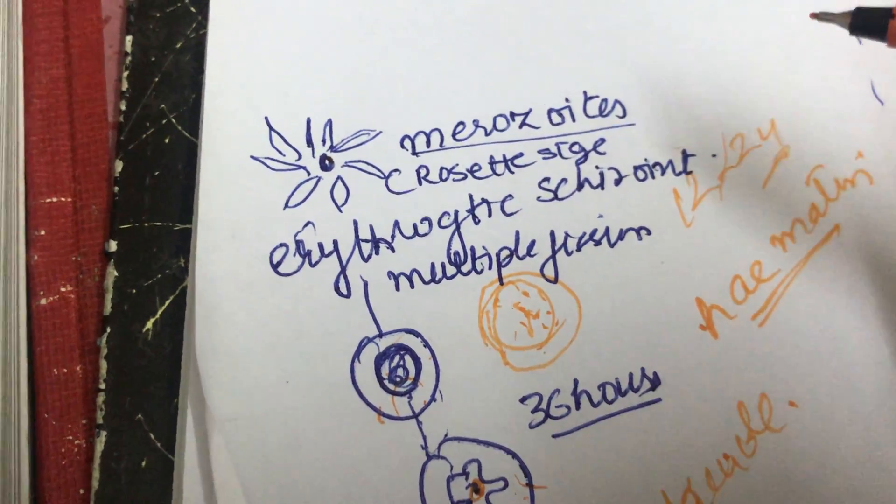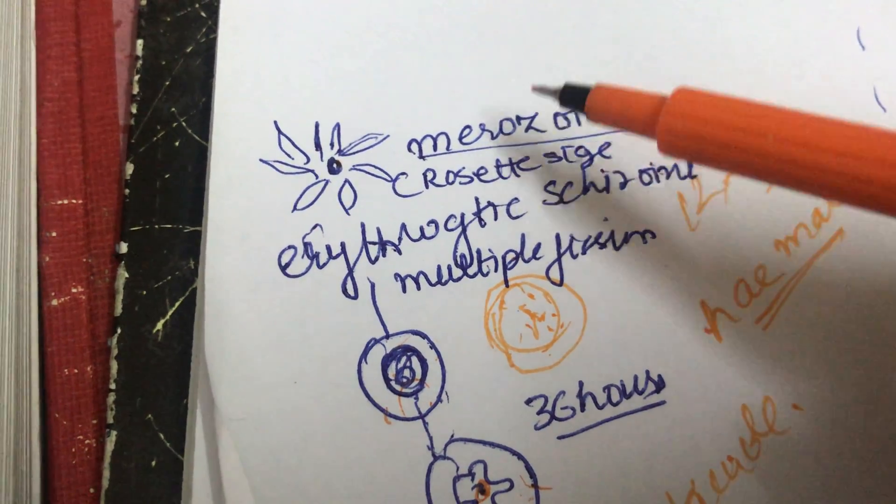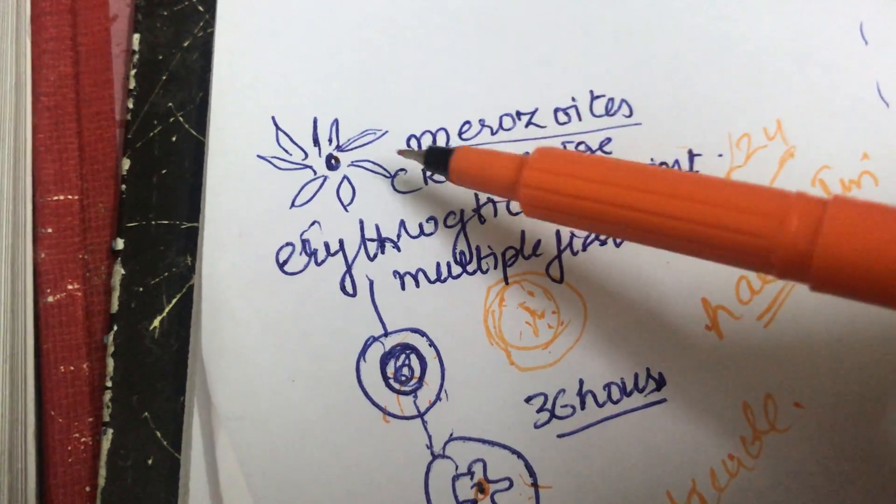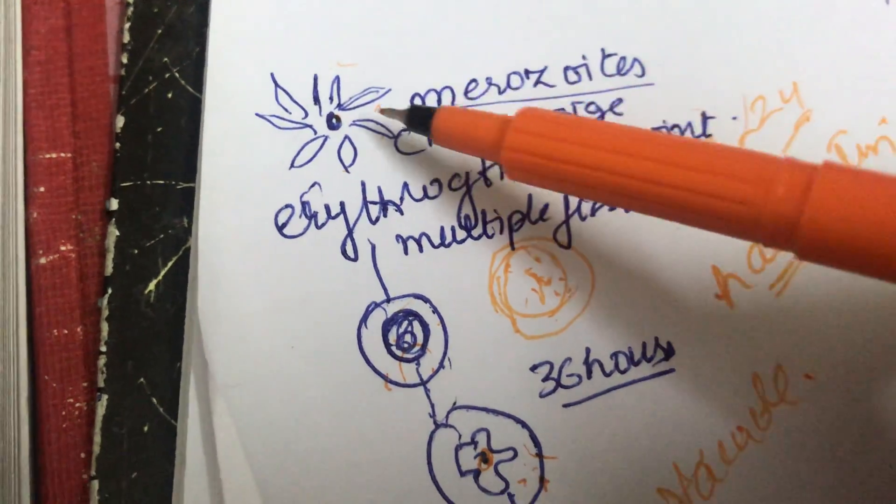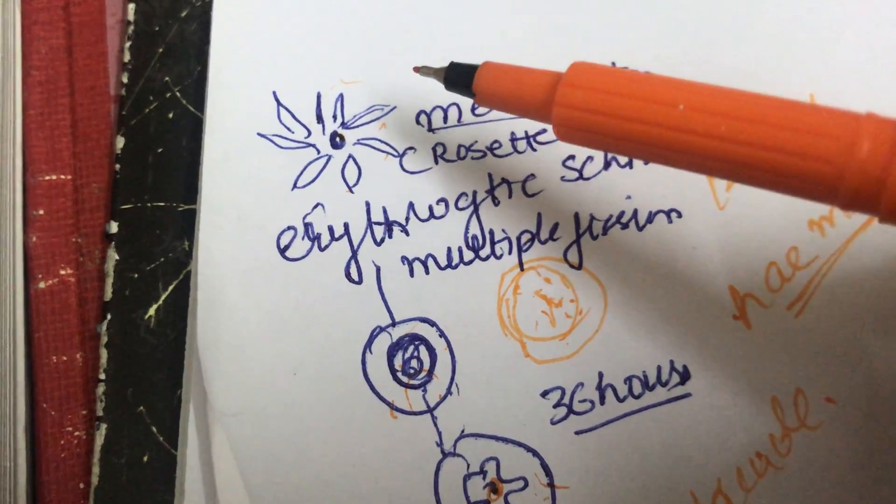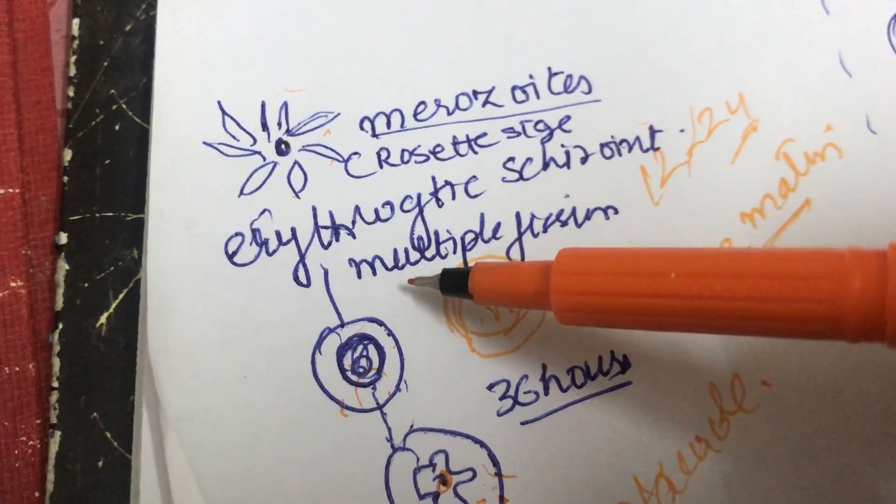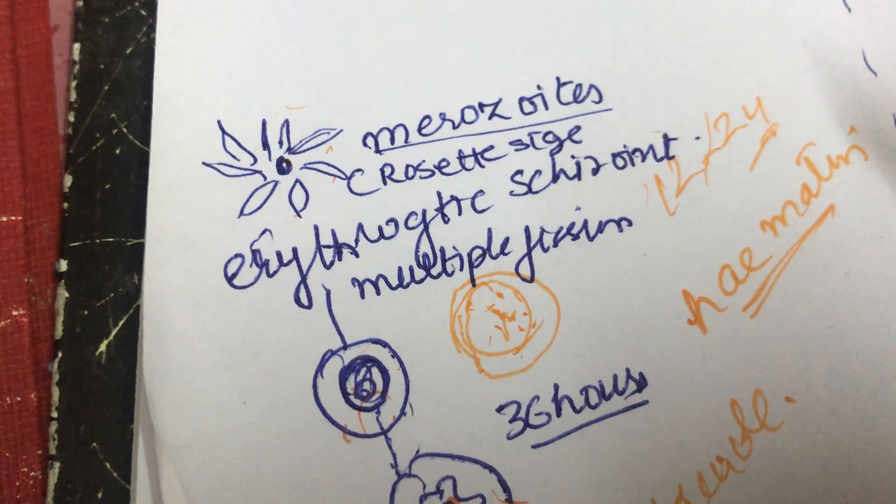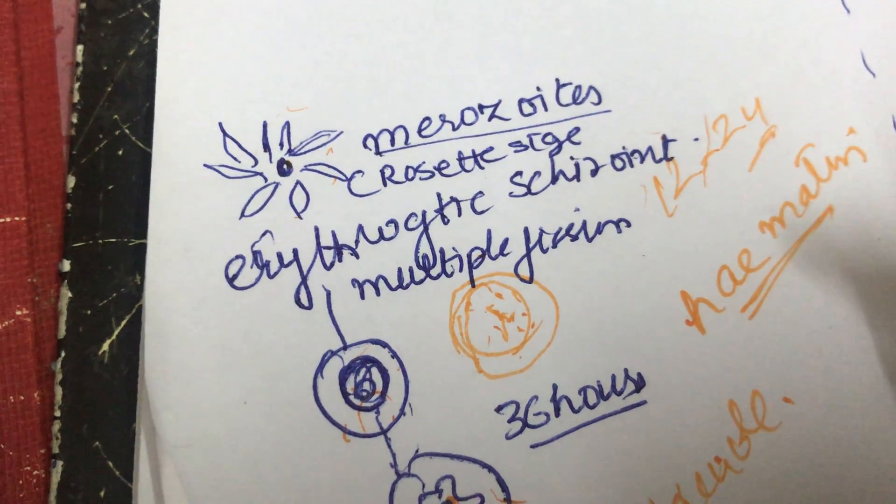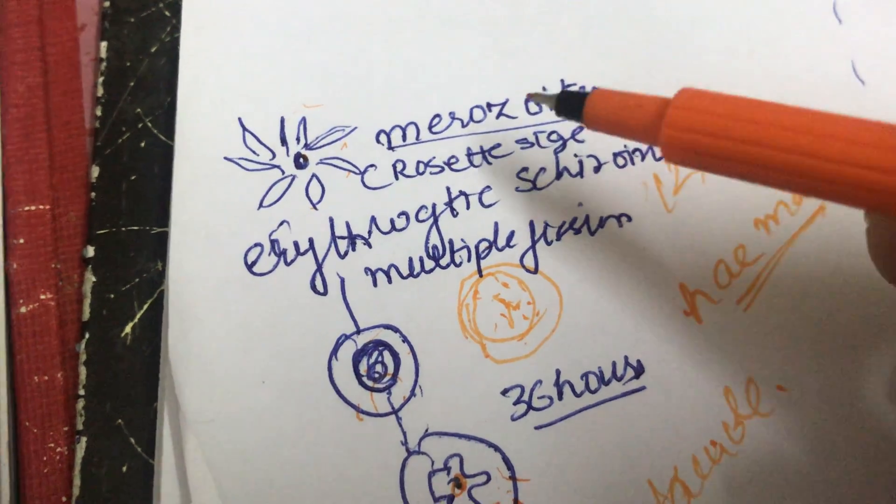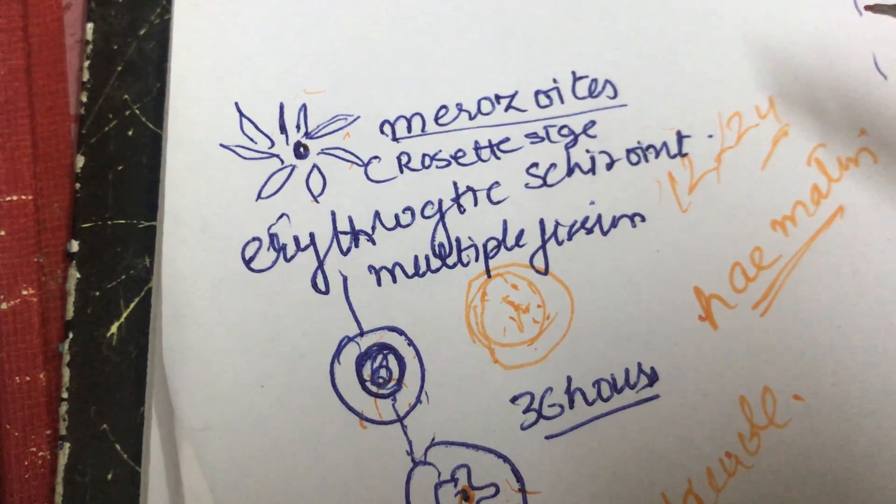A bit of cytoplasm gathers around each tiny nucleus in the multi-nucleated stage. This shape is called a merozoite. Merozoites are shorter and thicker than the sporozoite and oval in shape.